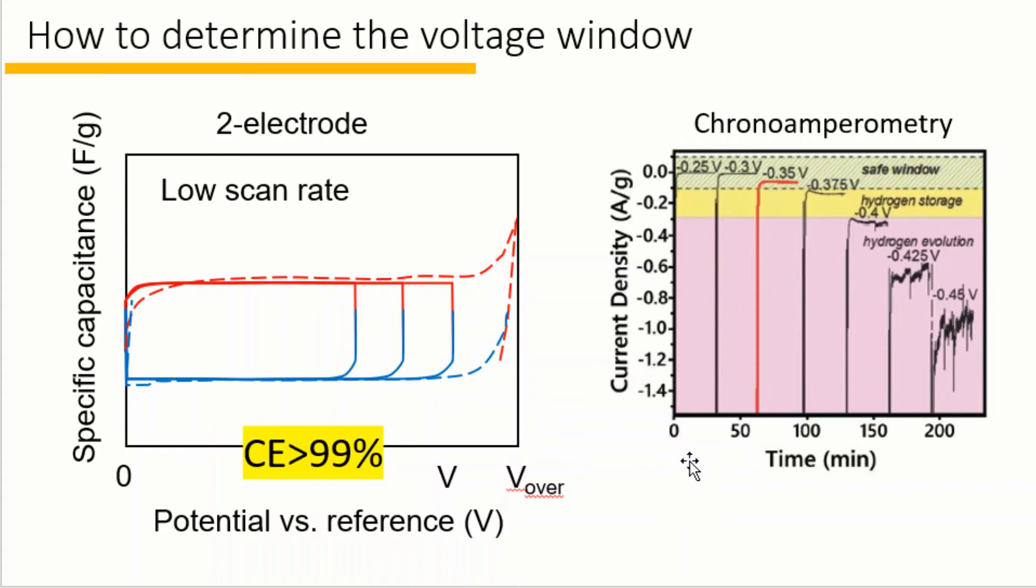Another way to determine the voltage is to use chronoamperometry. It means a constant potential is applied to the cell with a very large current response being recorded. The intensity of this current response will decrease over time until it finally stabilizes. The final current density, usually with a unit of milliamps per gram, means the leakage current. It means there is no side reactions that are occurring.